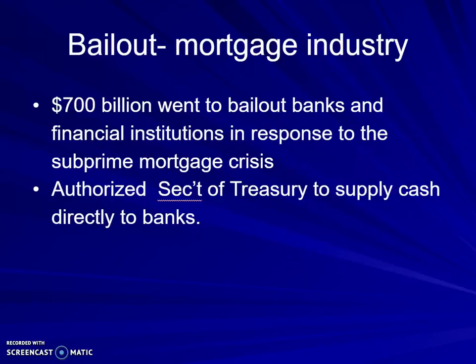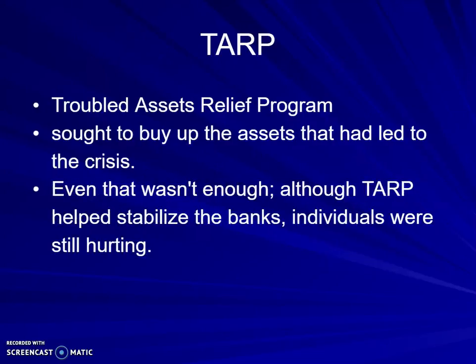$700 billion went into bailing out banks and financial institutions trying to fix the subprime mortgage crisis, authorizing the Secretary of the Treasury to supply cash directly to banks. The banks didn't end up shutting down — this is that idea of too big to fail. We had the Troubled Assets Relief Program, which was trying to buy up assets that had led to the crisis. A lot of banks had houses that had been foreclosed upon, and if you have many foreclosed properties, the prices of nearby houses also go down — because why would anyone pay full price when two doors down there's a foreclosure at a quarter of the cost?